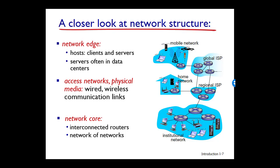In developed countries today, more than 65% of households have internet access, with Korea, Netherlands, Finland, and Sweden leading the way with more than 80% of households having internet access, almost all via high-speed broadband connection. Finland and Spain have recently declared high-speed internet access a legal right. Given this intense interest in home access, let's begin our overview of access networks by considering how homes connect to the internet.